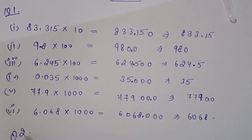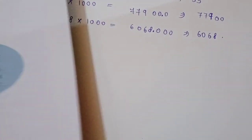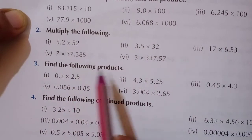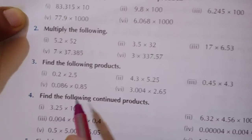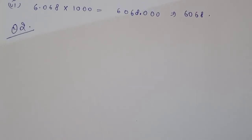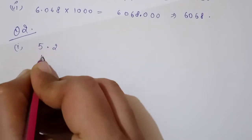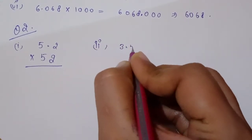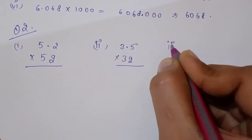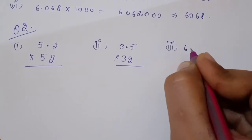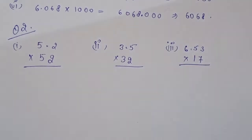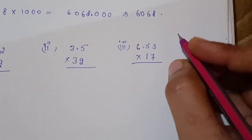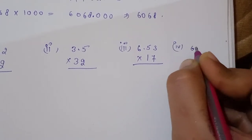Now moving to question number two: multiply the following numbers. The first is 5.2 × 52, the second is 3.5 × 32, the third is 6.53 × 17. This will be normal multiplication. Let's see the questions — after that the fourth one is 60.845.